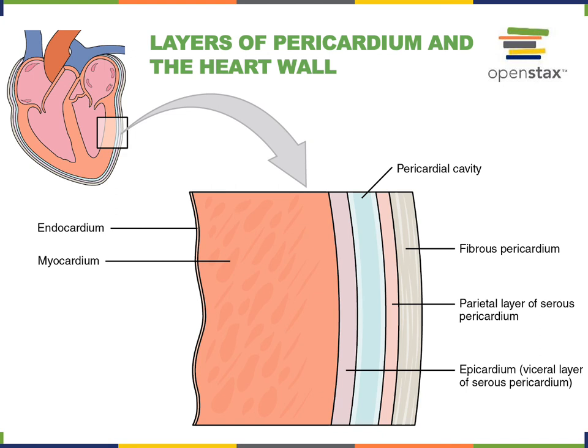The most superficial of those, the epicardium, is the simple squamous epithelium on the surface. Then the middle layer of the heart wall, the myocardium, contains cardiac muscle tissue. And the innermost layer of the heart wall is known as the endocardium, which consists of a simple squamous epithelium lining the chambers of the heart.